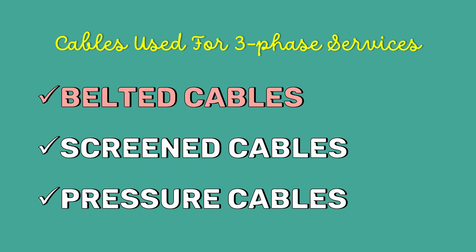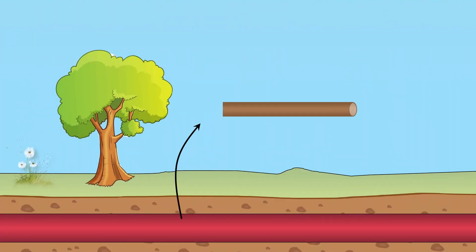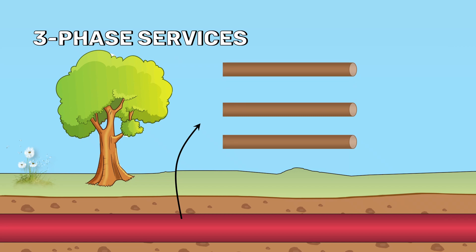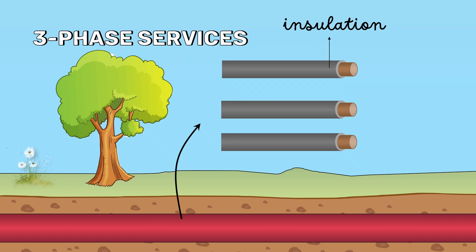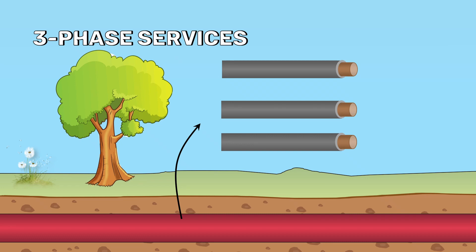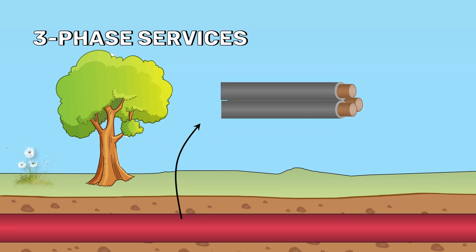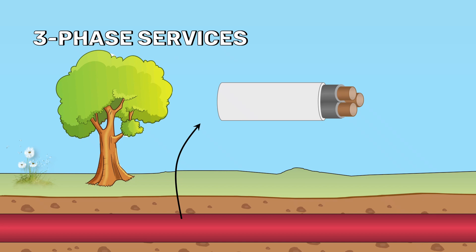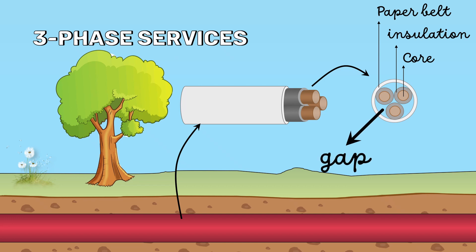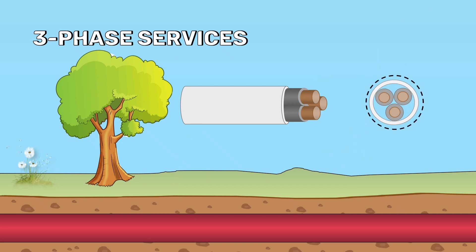Let's look at belted cables. In underground cables, the conductors are called cores. Since we are dealing with three-phase services, we have three cores. In belted cables, the cores are insulated from each other by layers of impregnated paper. These three insulated cores are grouped together using another layer of impregnated paper tape called a paper belt. Now you can see the gap between the insulated cores. To give a circular cross-section to the cable, we have to fill these gaps with fibrous insulating materials like jute.